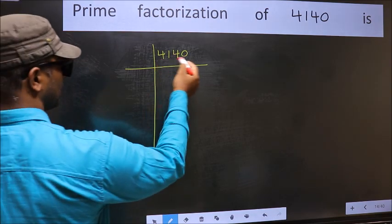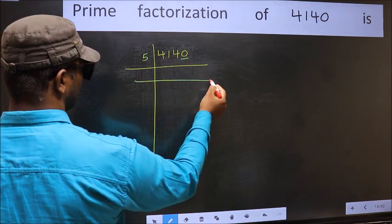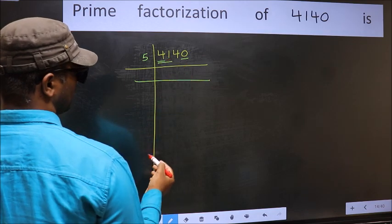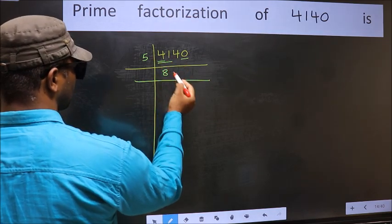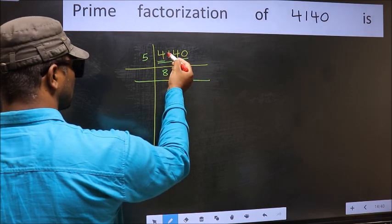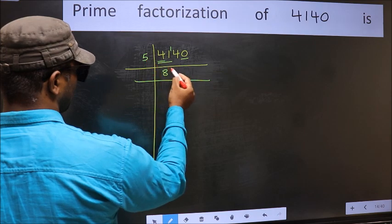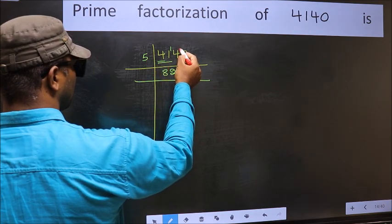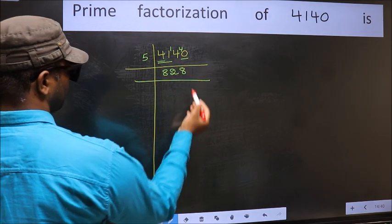In this number, last digit is 0 so take 5. First number 4 smaller than 5, so take two numbers 41. A number close to 41 in 5 table is 5×8, 40. 41-40, 1. 1 carried forward 14. A number close to 14 in 5 table is 5×2, 10. 14-10, 4. 4 carried forward 40. When do we get 40 in 5 table? 5×8 is 40.